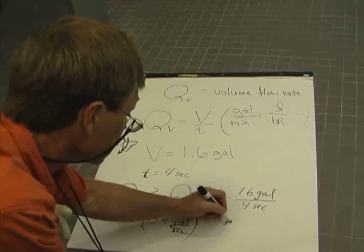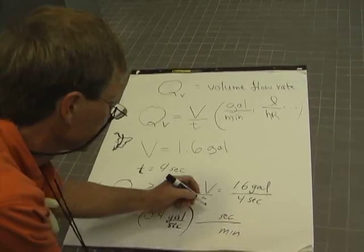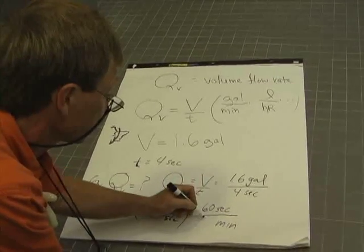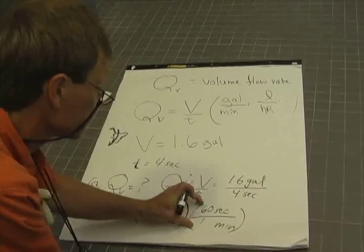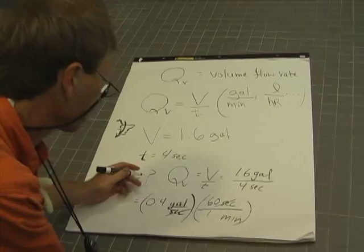I need seconds on top to cancel those seconds down below, and minutes on the bottom to get gallons per minute. There are 60 seconds in a minute. Every conversion is just multiplying by one, because 60 seconds is the same as one minute. Seconds cancel.